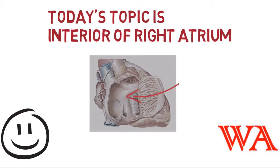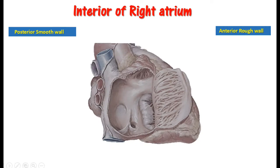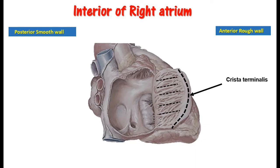Hello, you will see the interior of the right atrium. It has an anterior wall and a posterior smooth wall. On the anterior wall you have the crista terminalis extending from the superior vena cava to the inferior vena cava. And we have the transversely running muscle fibers. These are known as the musculi pectinati.